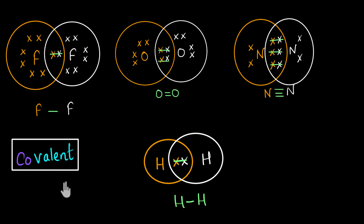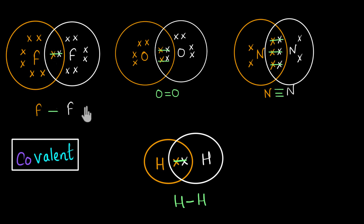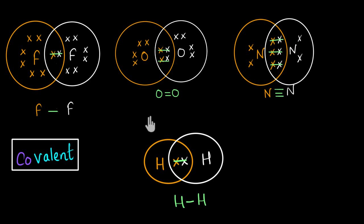In the video on covalent bonds, we saw how atoms can share electrons, form covalent bonds, and stick together. Now in this video, let's look at some more and different examples — how atoms of different elements like hydrogen and oxygen can form covalent bonds and stick together. We will also see how to draw electron dot structures of these heteroatomic molecules.